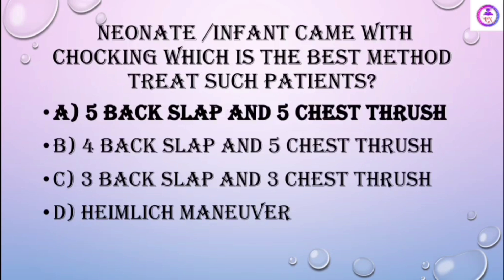A neonate or oblique infant came with choking — which is the best method to treat such a patient? Back slaps and chest thrusts are the best method.